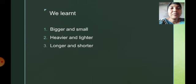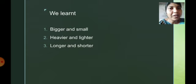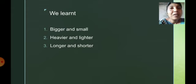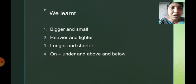Next, we learned about longer and shorter. If the object is more in length, we use the word longer. When we compare between two objects, if one object is long in size or length, we use the word longer, and if it is shorter, we use shorter. Next, we learned about position words: on, under, above, and below.